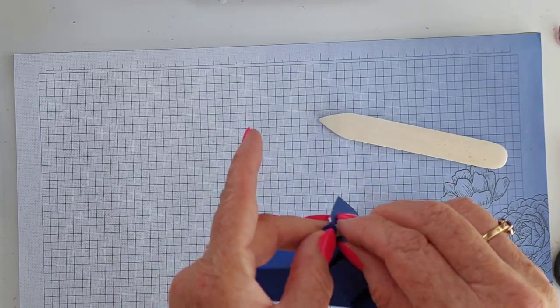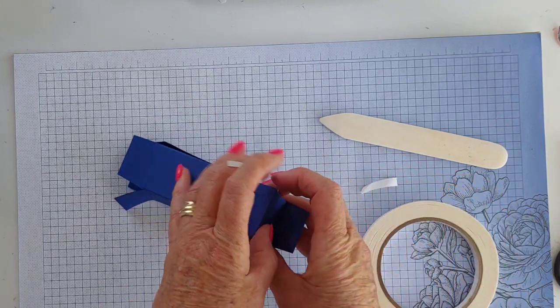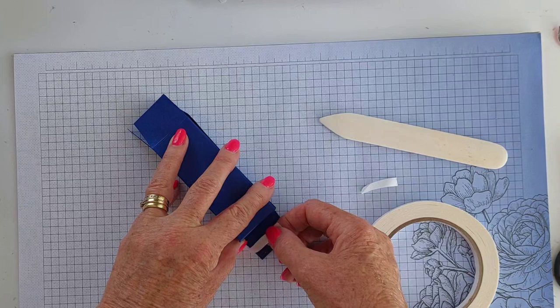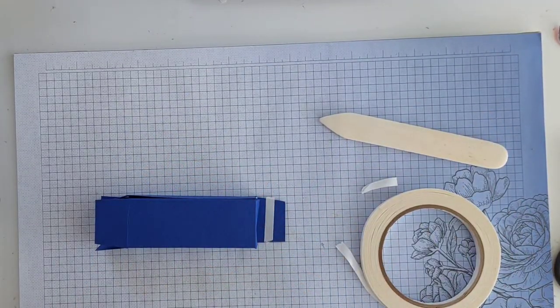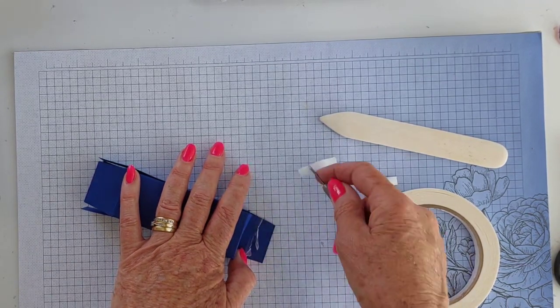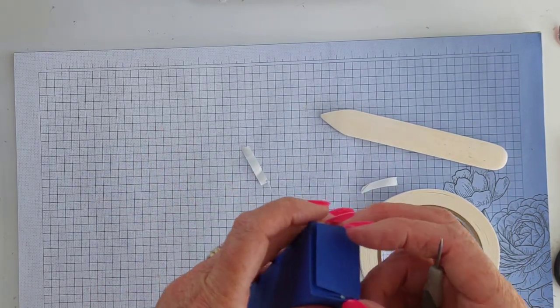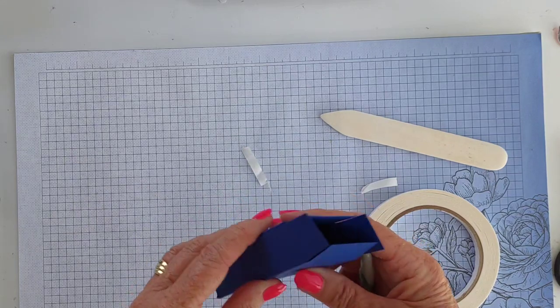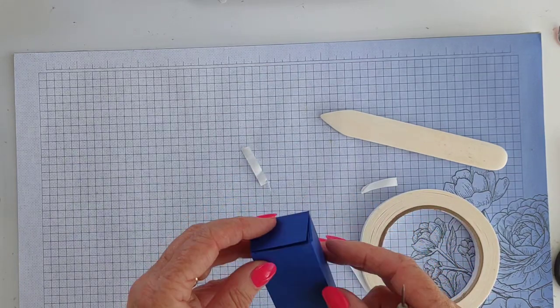I'm going to put a little bit of Tear & Tape on this one. Again, you can use any tape that you prefer. And that's the bottom of the box done. The back is where that seam is, and it will close up like that.